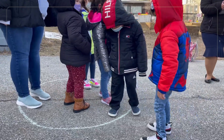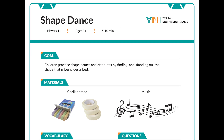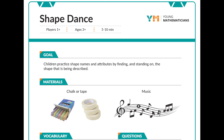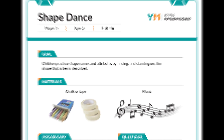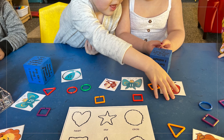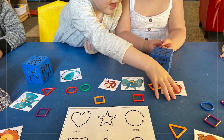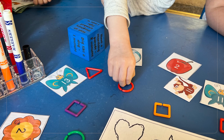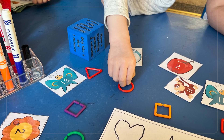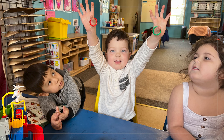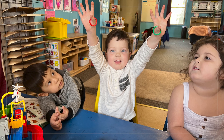You can find more ideas for clues in the instruction sheet for this game on our website. If you're in a small space and don't have room to draw shapes on the ground, you can play this game by spreading out shapes on a table and having children pick up a shape that matches your clue.